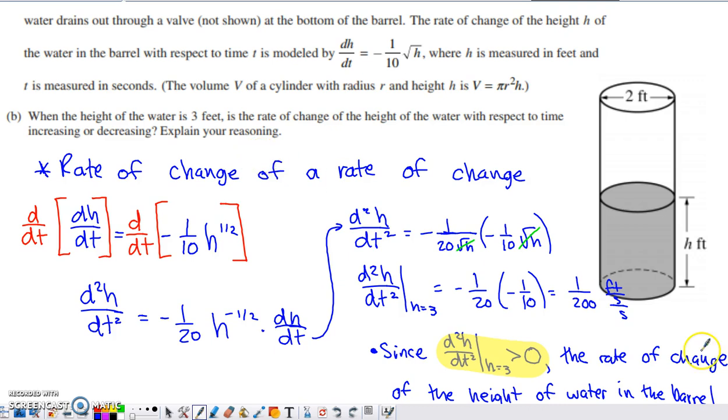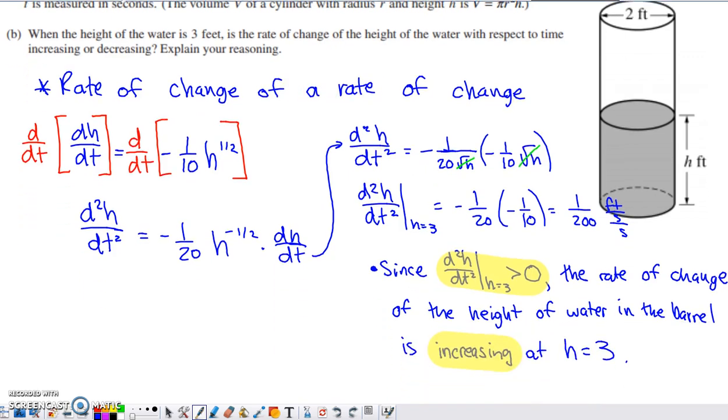The units there would be feet per second per second. I don't think it asked for units, but that would be the appropriate set of units for it. So what can we say about whether the rate of change of the height of the water is increasing or decreasing? Since this derivative is positive, the rate of change of the height of water in the barrel is increasing. At h equals 3, it's increasing the entire amount of time that the water is leaking from the barrel, since it's non-dependent on h or t.